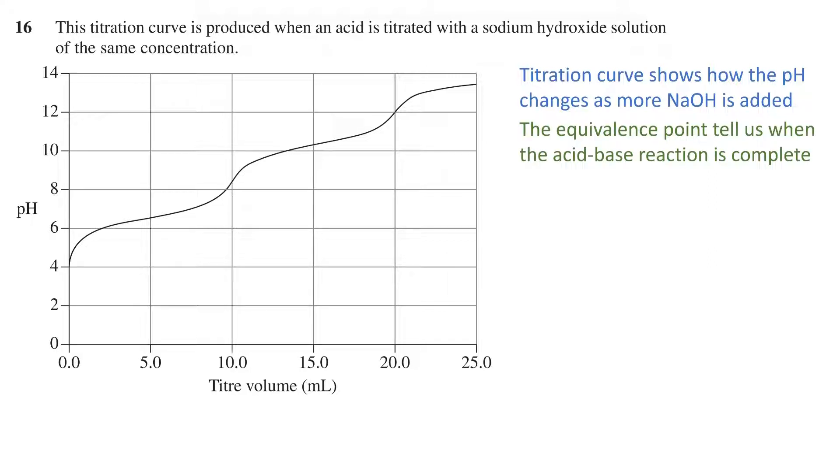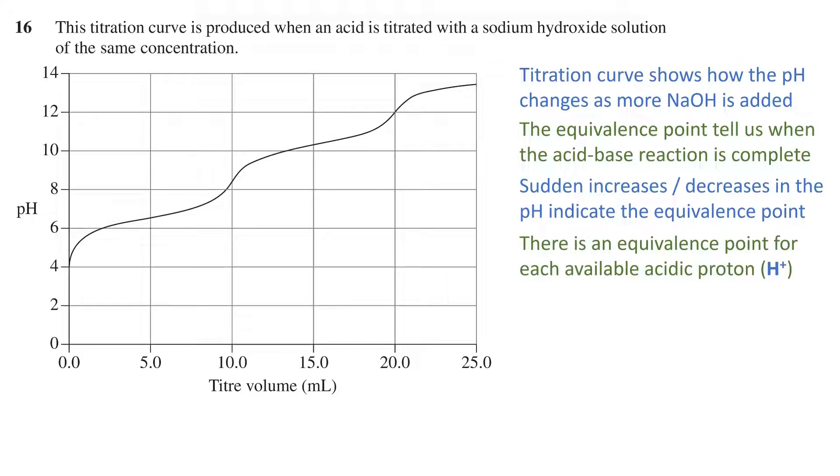For equilibrium reactions, this is when the reaction has been forced all the way to the right. This is seen on the curve as sudden increases or decreases in the pH. For acids with more than one proton or hydrogen ion available for reaction, we get a separate reaction for each, and therefore a separate equivalence point.